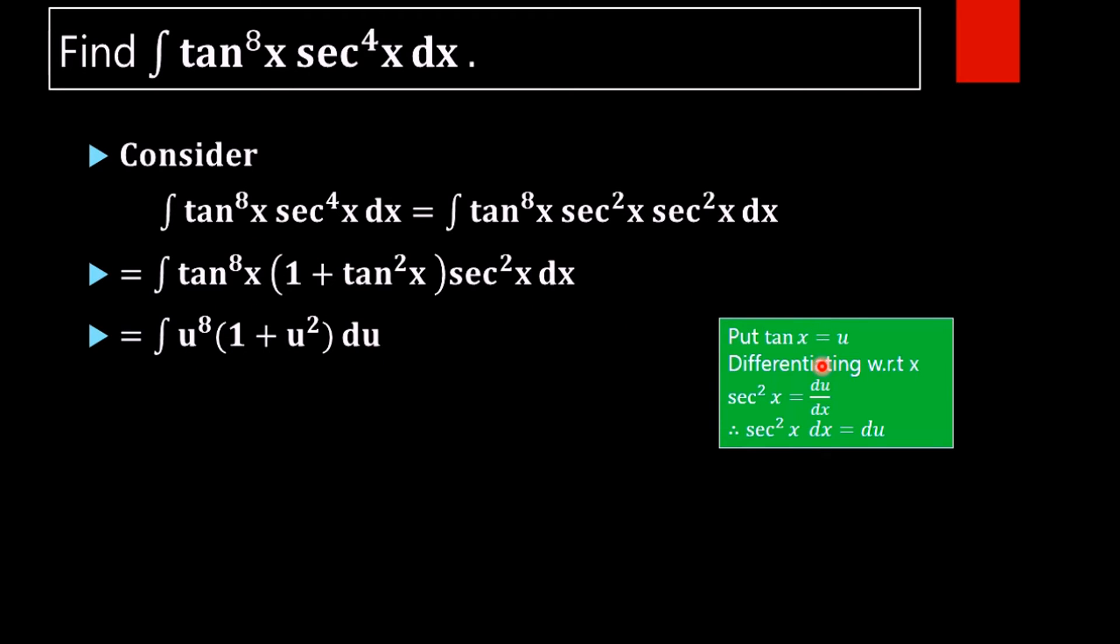We are substituting tan x as u because we get the derivative of tan x here, that is sec^2(x) dx. Now on multiplying u^8 inside, we will get integral of u^8 plus u^10 du.